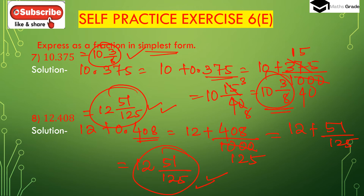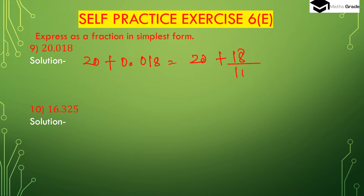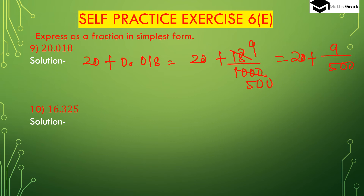Question number 9: 20.018. We can write 20 plus 0.018. After the decimal place there are 3 digits, so we have to divide 18 by 1000. 1000 has 3 zeros. Now 18 and 1000 are both divisible by 2: 18 divided by 2 is 9, and 1000 divided by 2 is 500. So we get 9 divided by 500, which is in simplest form. The answer is 20 9/500.